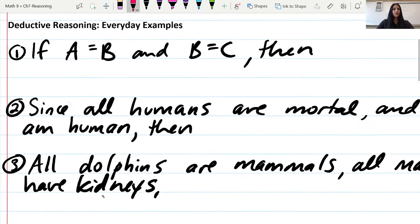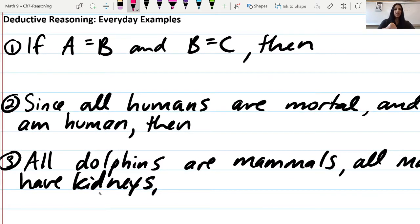For the first one, if A equals B and B equals C, what can we deduce? If they both equal B, then A must equal C. We're looking for similarities, so based on the statements made, we can deduce that A equals C since they both equal B.